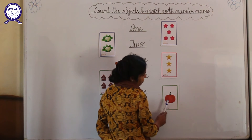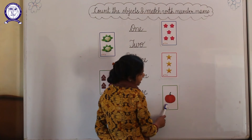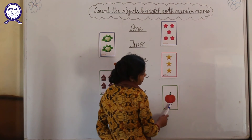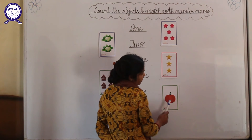And look here beta, which picture is this? This is a pumpkin. And how many pumpkins are there? 1 pumpkin.